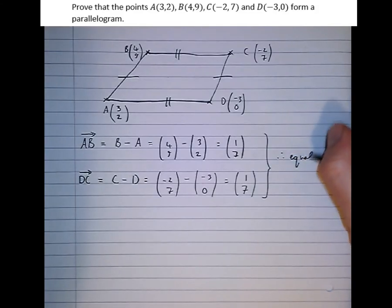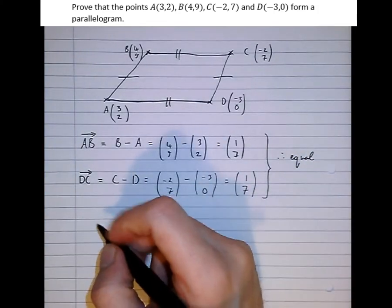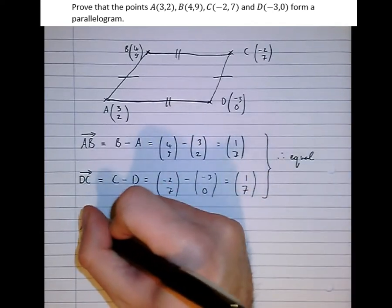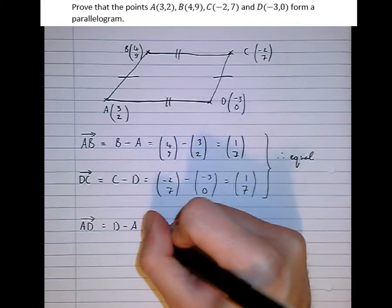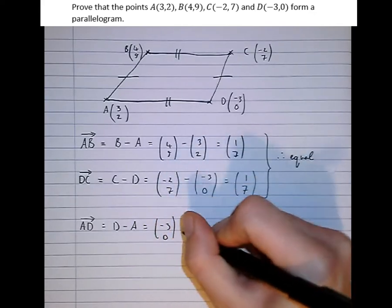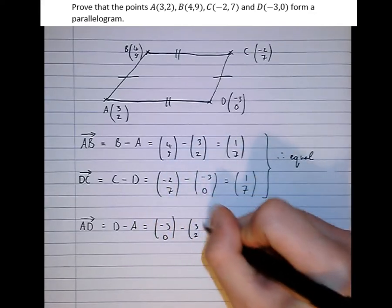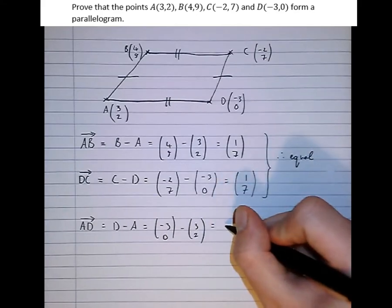equal. Now let's try for the other ones. Let's try AD, which is equal to D minus A, which is (-3,0) minus (3,2), which is (-6,-2). And now BC,